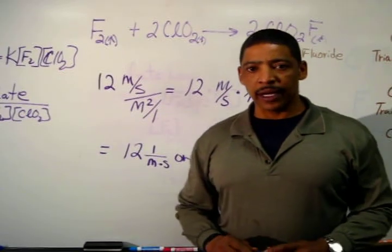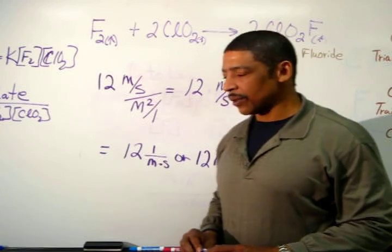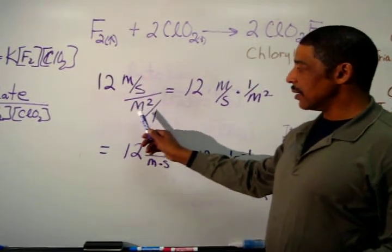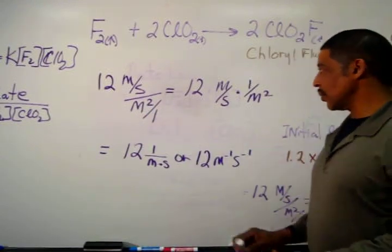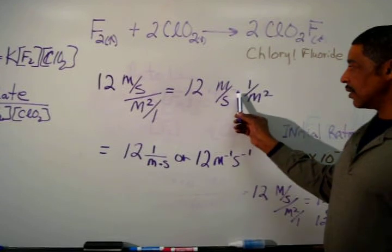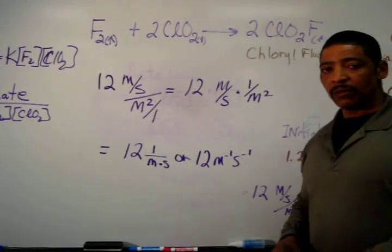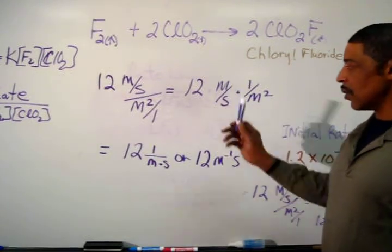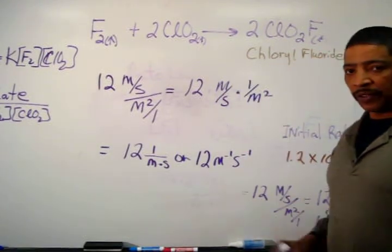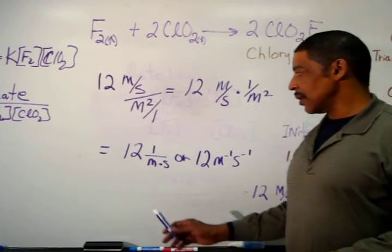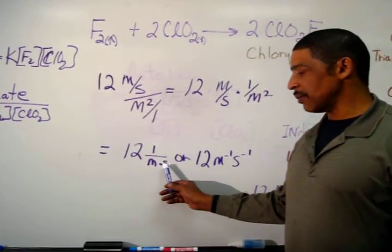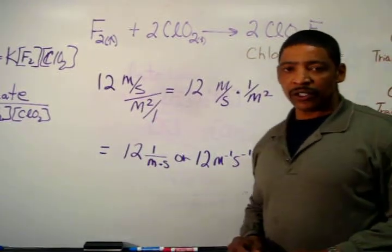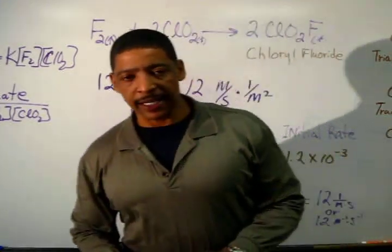The units for k were determined as follows: 12 molar per second divided by molar squared equals 12 molar per second times 1 over molar squared. Molar squared will cancel molar. Therefore, these units may be simplified as 12 one over molar times second, or simply written as 12 molar to the minus 1, second to the minus 1.